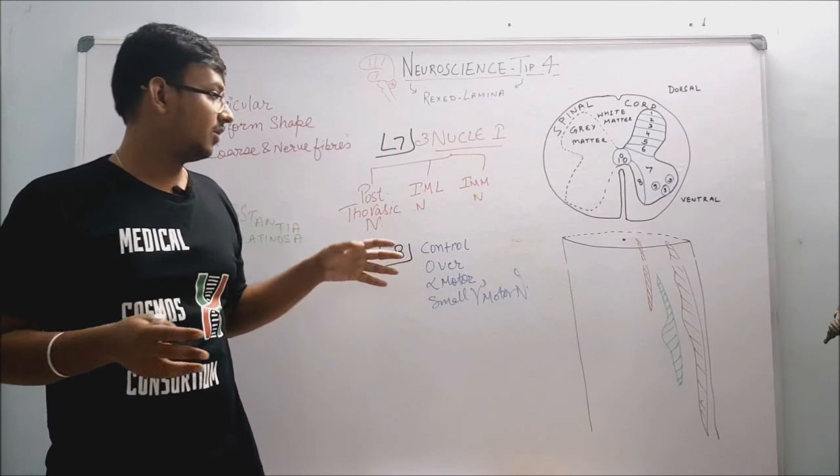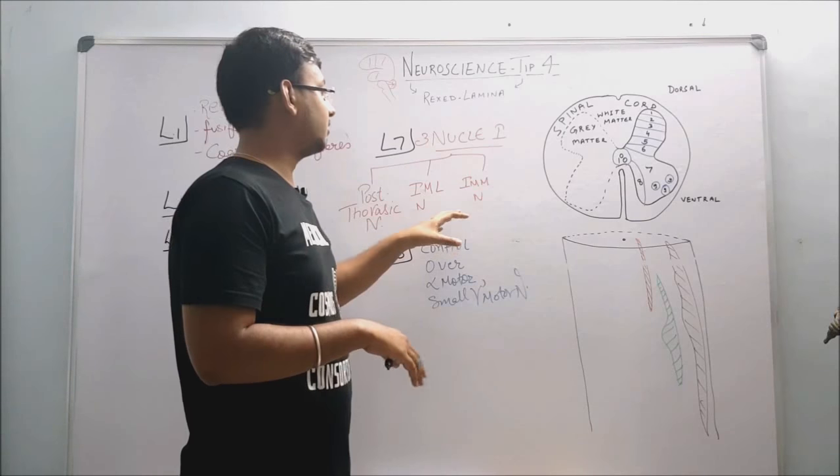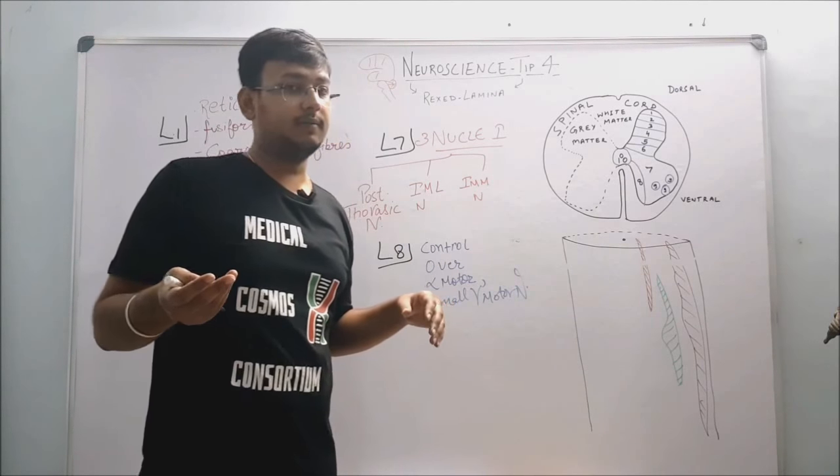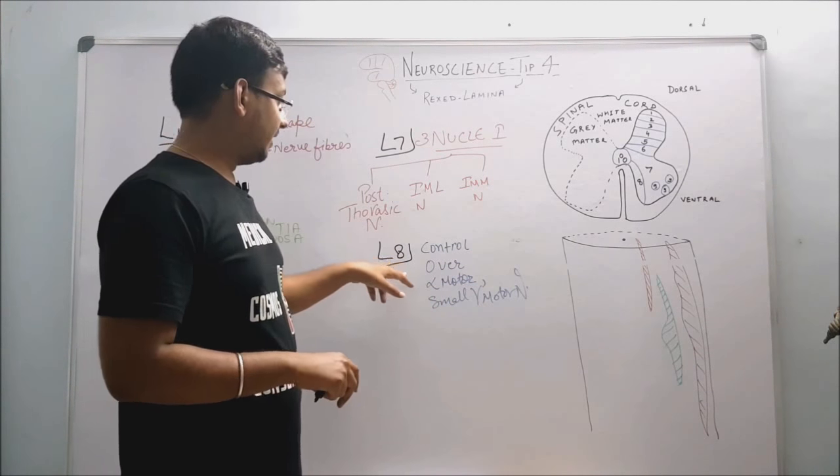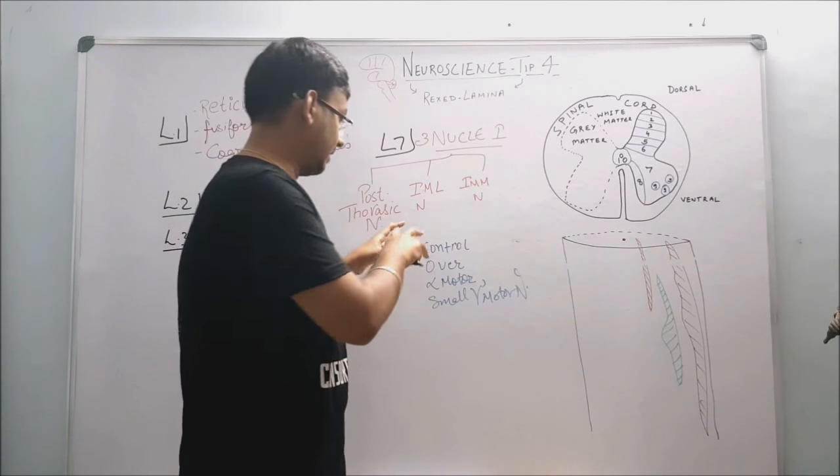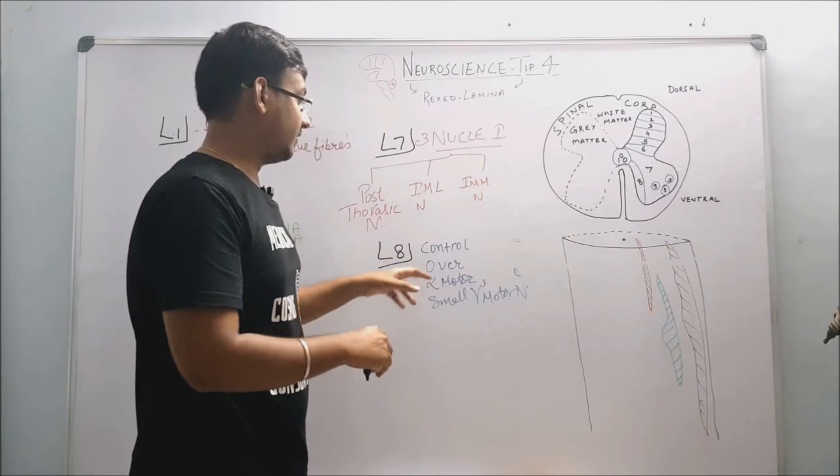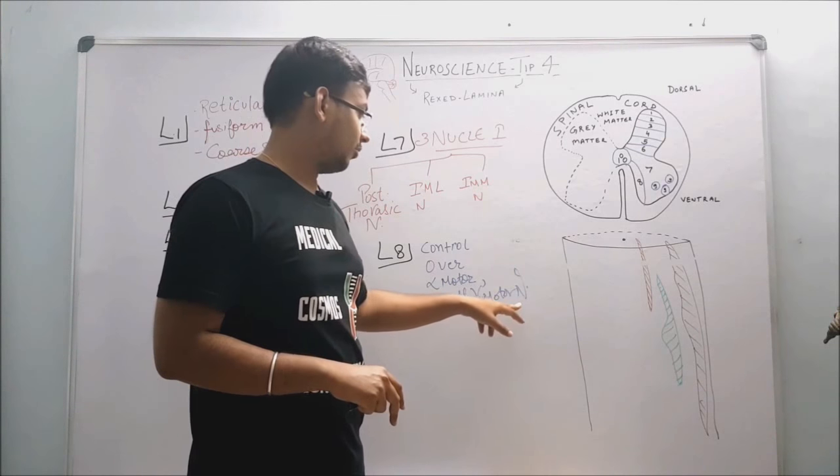Finally and lastly, in L8, we have the neurons or cell bodies which have control over alpha motor and small gamma motor. Basically, the alpha motor neuron activity is decided by the activity of small gamma motor neurons.